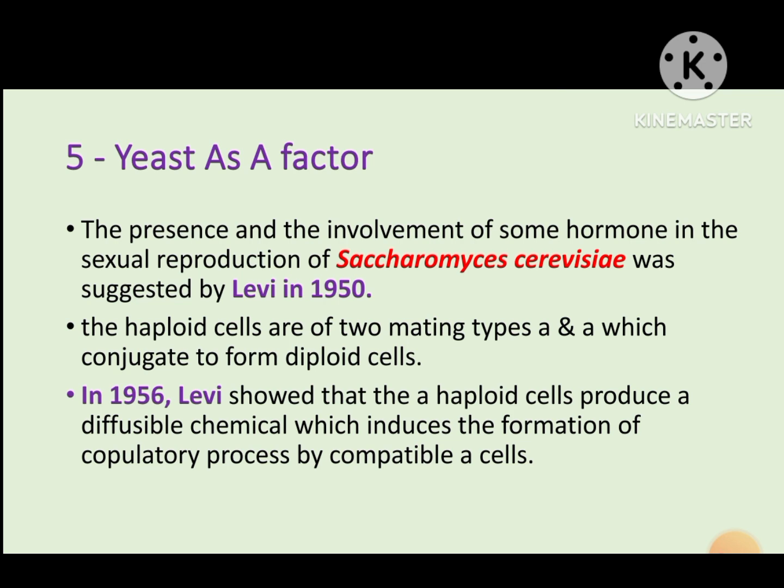The yeast alpha factor was first observed by Levi in 1950 in Saccharomyces cerevisiae, where sexual reproduction is controlled by hormones. Two forms of the yeast factor exist: the 'a' form and the 'alpha' form. Diffusible chemical substances synthesized in the alpha type stimulate the formation of copulatory processes. The alpha factor was isolated in pure form and contains a peptide with a copper ion in its structure, with a molecular weight of 1400.